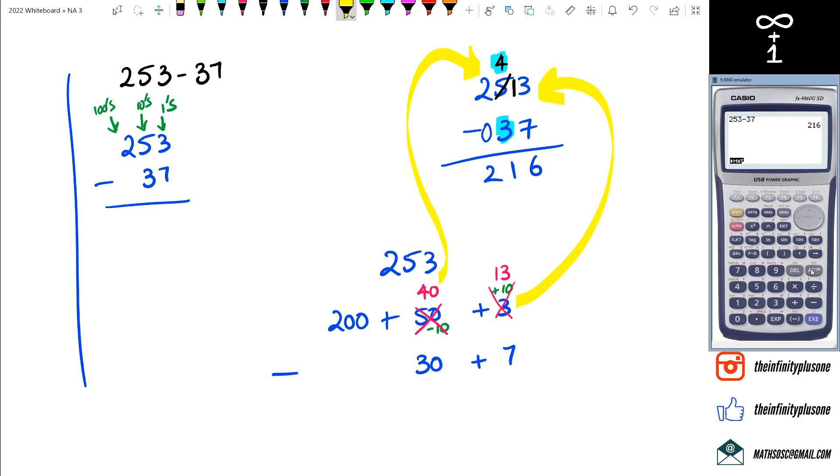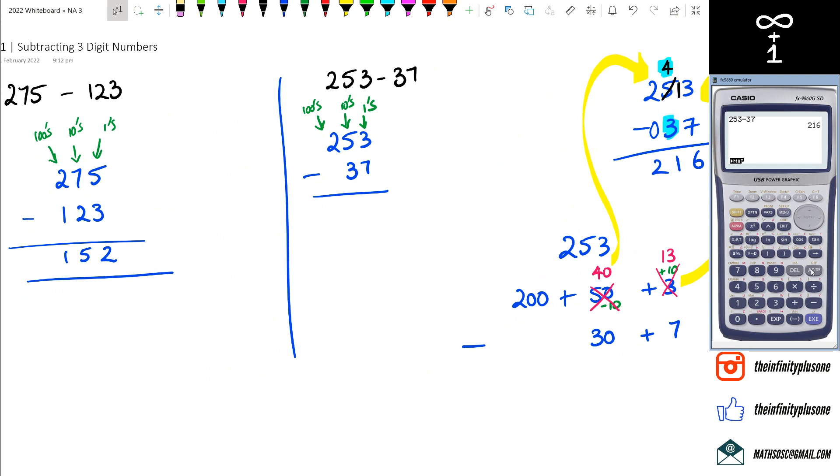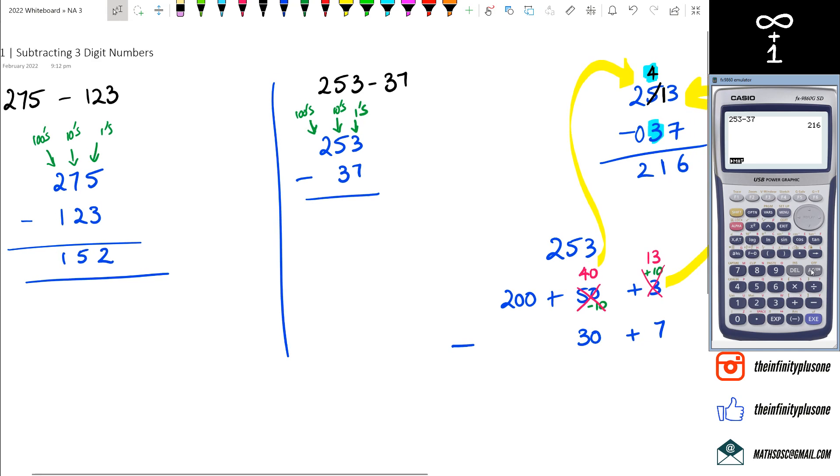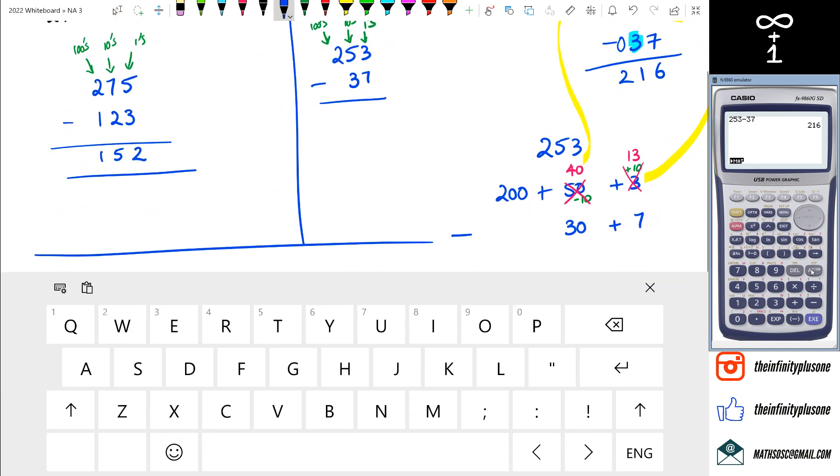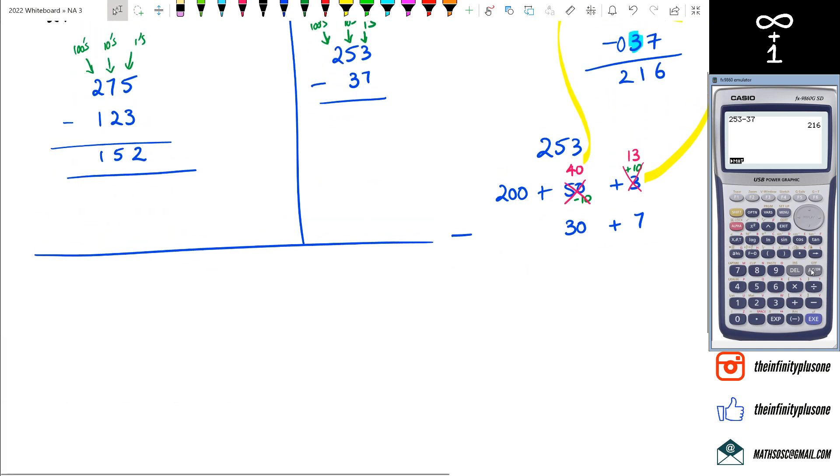Are you allowed to do it this way? Absolutely, why not? There are other methods of doing this. I've seen people do 253 take away 40, and then add 3. You can do things like that as well. But ultimately, I'm just trying to show you guys a couple of strategies. Let's just do one more problem just so we're on the same page about this.